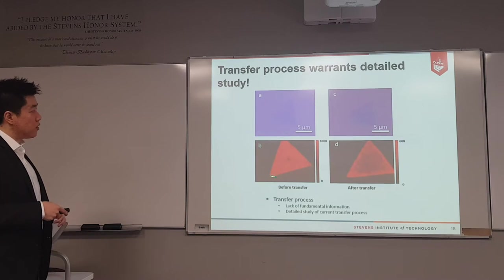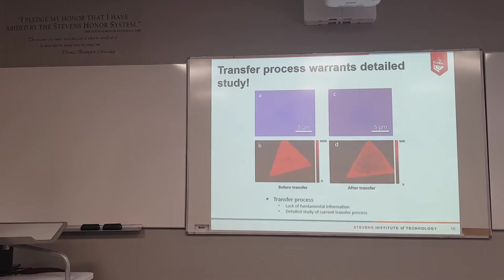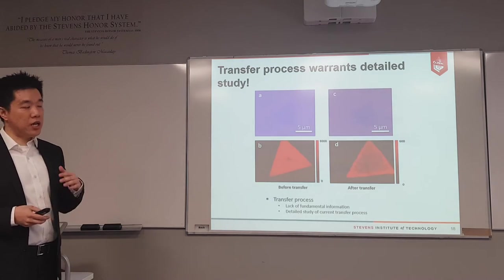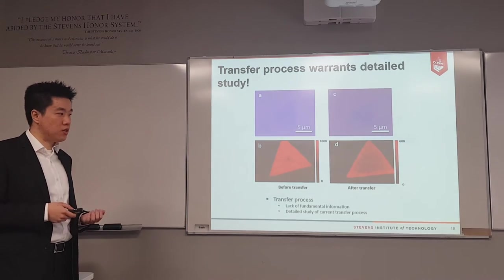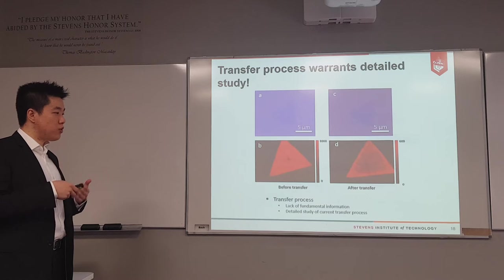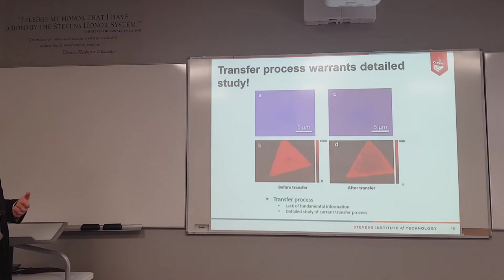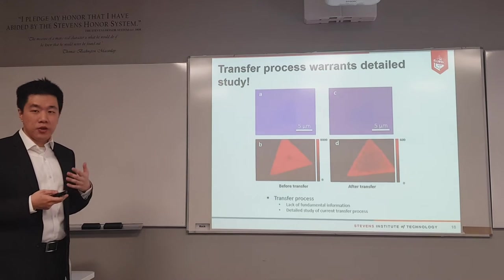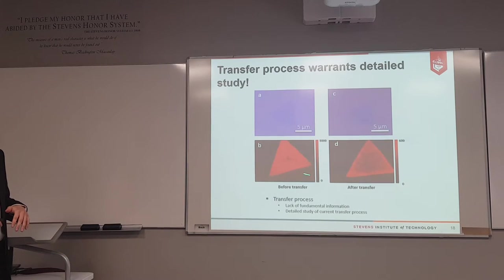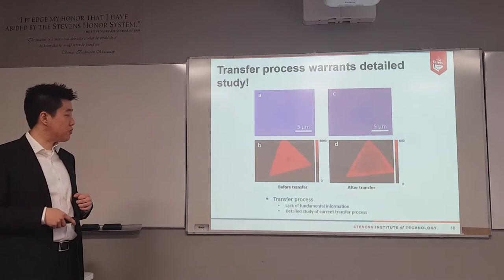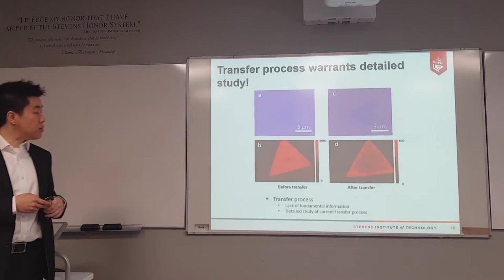However, this PMMA-assisted transfer method was developed by researchers who directly copied it from graphene transfer — applying a PMMA layer, using copper or nickel etching at the bottom, then transferring PMMA and graphene to another substrate. Does this method really give a clean transfer of TMDs? There is a very lack of study in this area. In our experience, there is heavy photoluminescence quenching after every transfer, indicating this area needs further study.